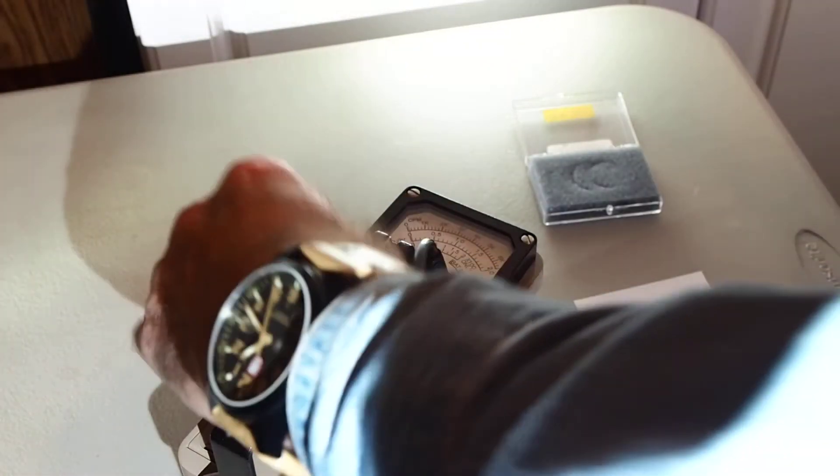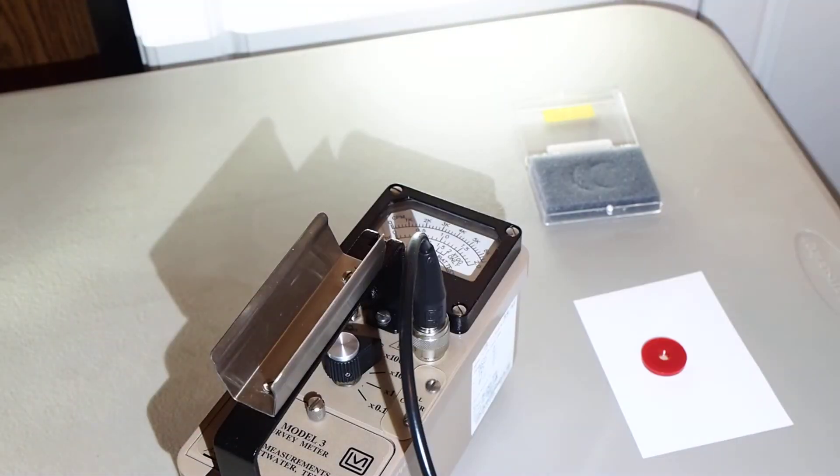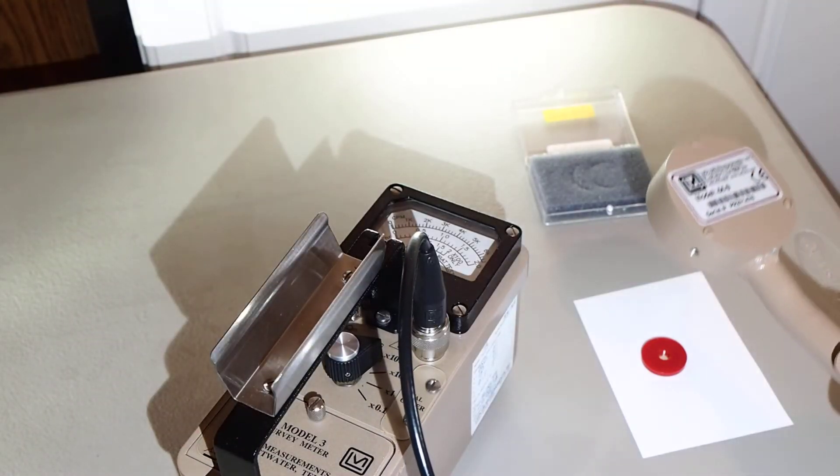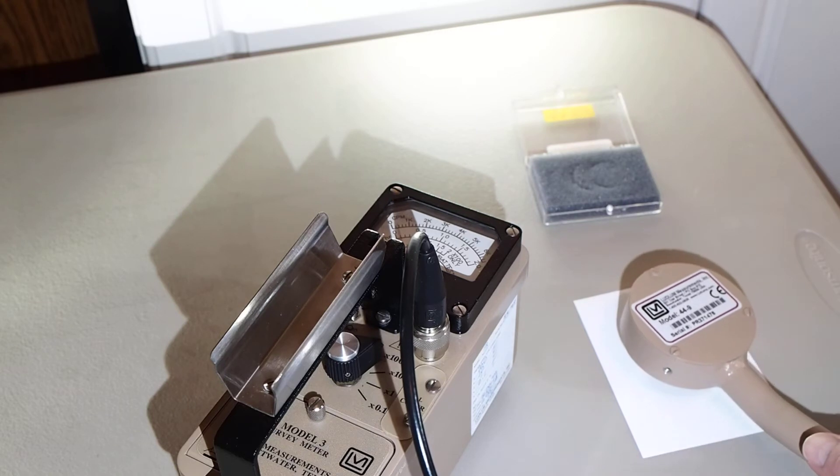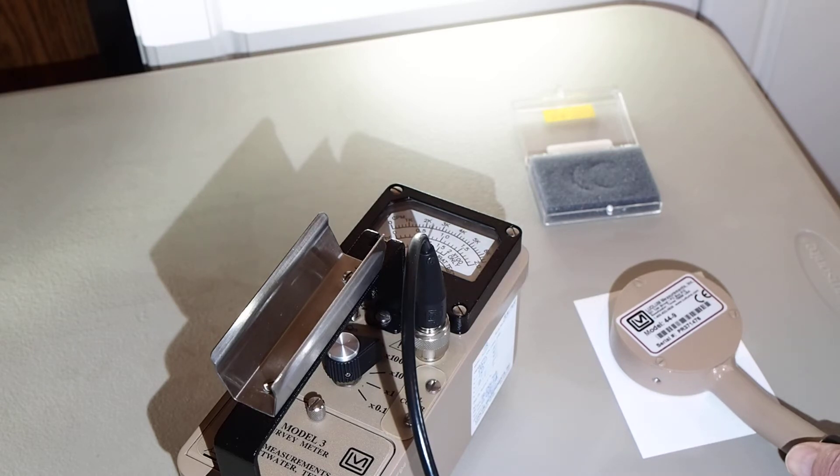So let's reset our meter, go up to the times 10 scale, which will read up to about 66,000 counts per minute. Alright, we're peaking out in immediate proximity to the disk source, about 24,000 counts per minute.